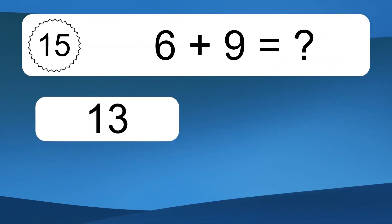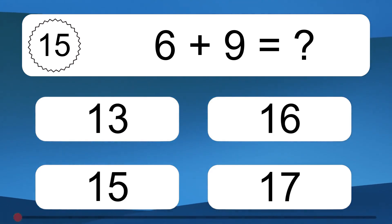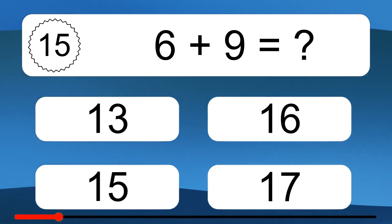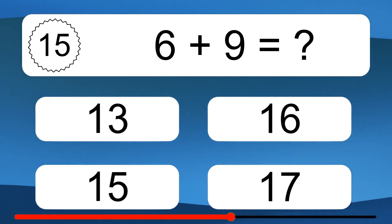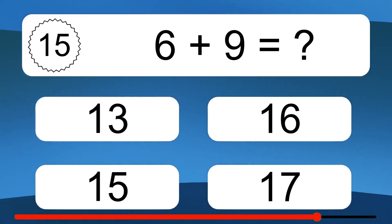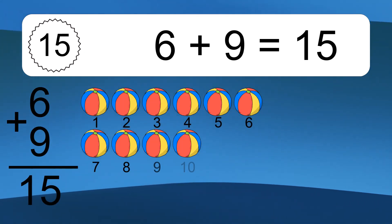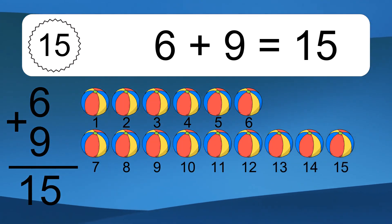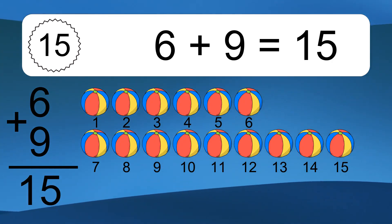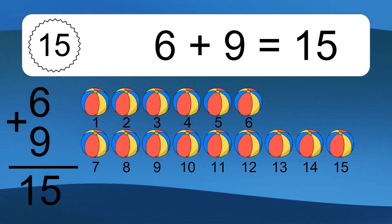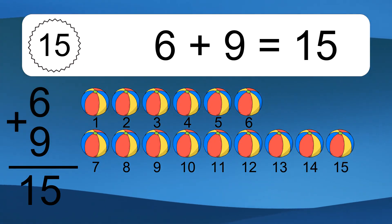6 plus 9 equals what? 6 plus 9 equals 15. Let's count it. 1, 2, 3, 4, 5, 6, 7, 8, 9, 10, 11, 12, 13, 14, 15.